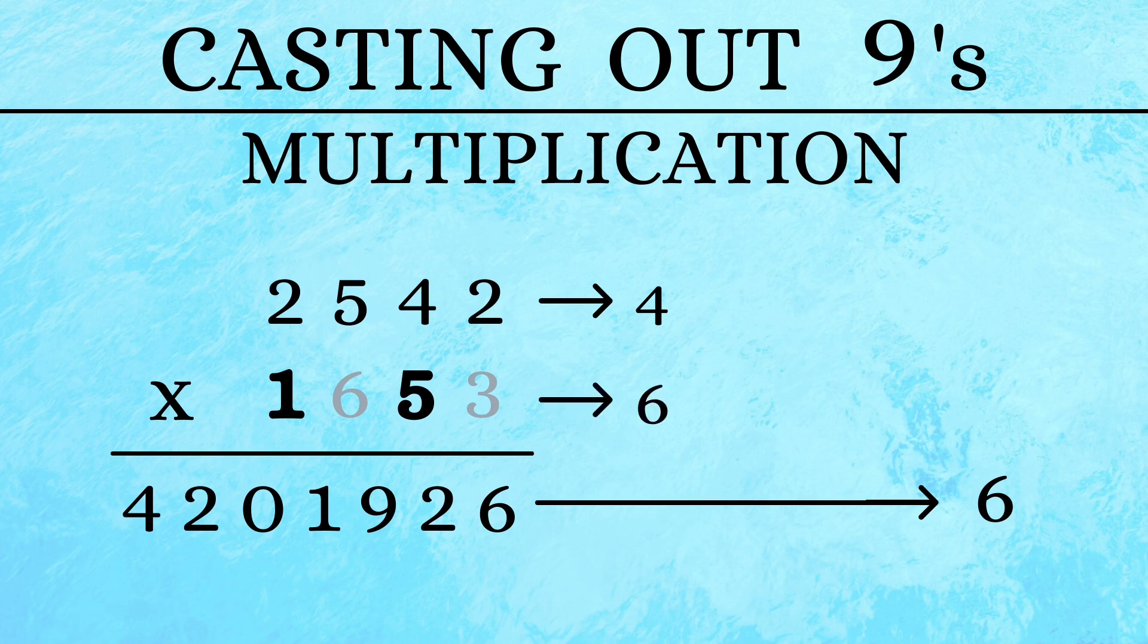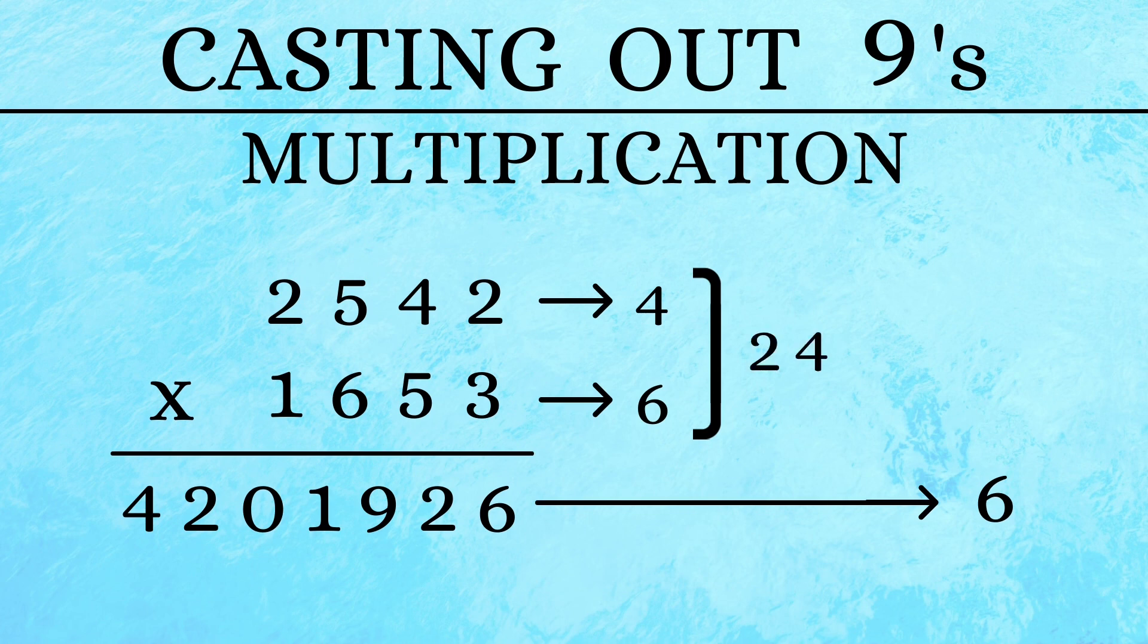Now remember, since we are verifying multiplication, we will be multiplying 4 and 6. So 4 into 6 is 24. Now adding up 2 and 4 gives us a 6 again. So now you can be sure that your calculations are correct.